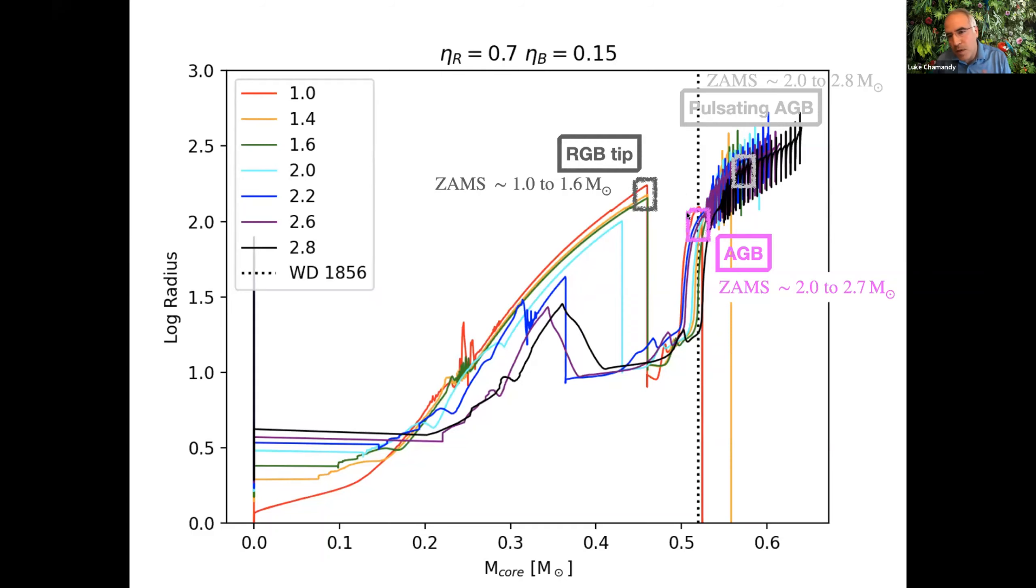If the core mass is really 0.52, it sets a range of possible ZAMS masses. And that range is about two to 2.7 solar masses. However, it's possible there was a range of uncertainty in that measurement. So it's possible that it happened on the RGB tip somewhere. This is sort of the lower bound of the uncertainty, and that sets limit of about one to 1.6 solar masses. Or it could have happened as Felipe's model favors during the pulsating phase of the AGB. And then the ZAMS mass would have been somewhere between two and 2.8.